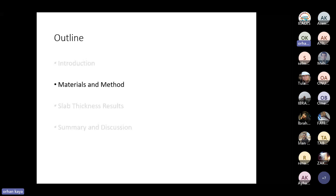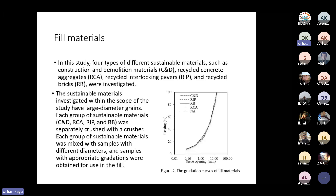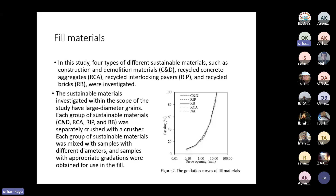In the materials and methods section, four types of sustainable materials were investigated: construction and demolition materials (C&D), recycled concrete aggregates (RCA), recycled interlocking pavers (RIP), and recycled bricks (RB). Each group of sustainable materials was separately crushed and mixed with samples of different diameters to obtain appropriate gradations for use in the field, as shown in Figure 2.